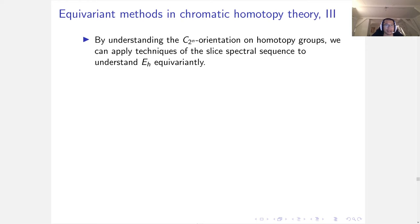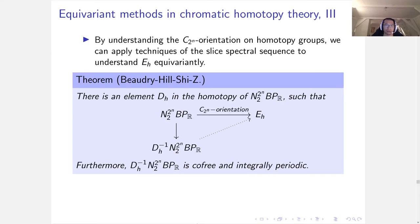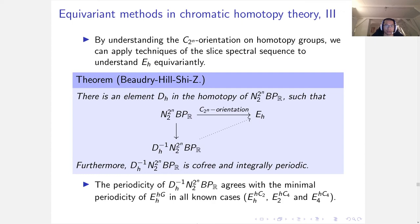Using the real orientation and its norm, we can apply techniques of the slice spectral sequence to understand E_h equivariantly. For example, we can show that the equivariant orientation factors through a localization of norm BP_R. Furthermore, this localization is both cofree and it's periodic. That implies that E-theories are periodic themselves equivariantly. What's more interesting is that the periodicity of this localization agrees with the minimal periodicity of homotopy fixed points of E-theories in all known cases.